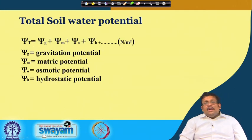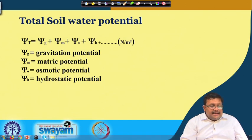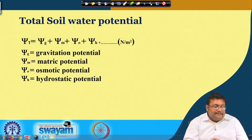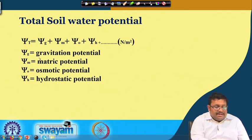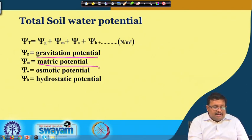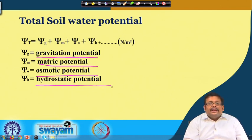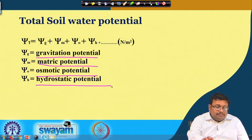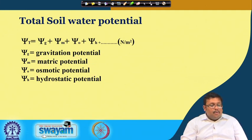Total soil water potential is basically a combination of four different potentials: gravitational potential, matric potential, osmotic potential, and hydrostatic potential. It is expressed in terms of Newton per meter squared. Let us see them one by one.